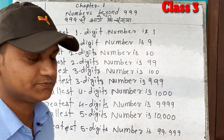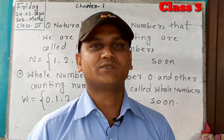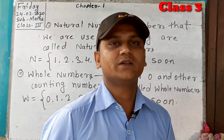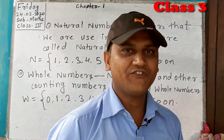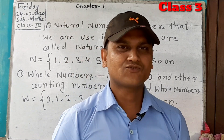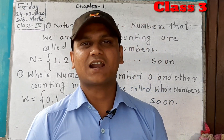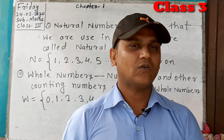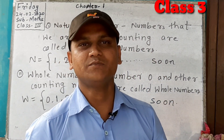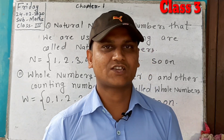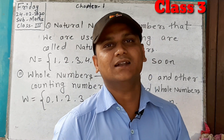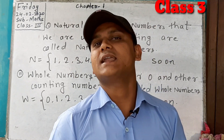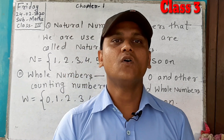Starting this chapter, I want to introduce you to four terms of numbers: natural numbers, whole numbers, even numbers, and odd numbers. Counting numbers are called natural numbers. It is represented as N. Example: 1, 2, 3, 4, 5 and so on. If we add 0 to natural numbers, it is called whole numbers. It is represented as W: 0, 1, 2, 3...